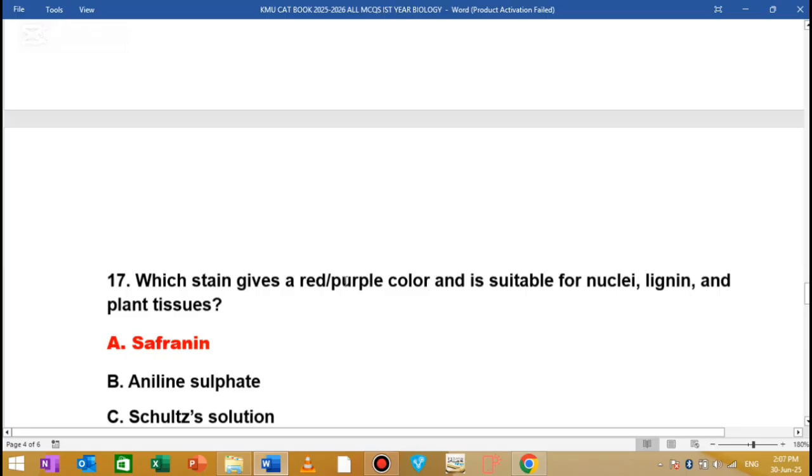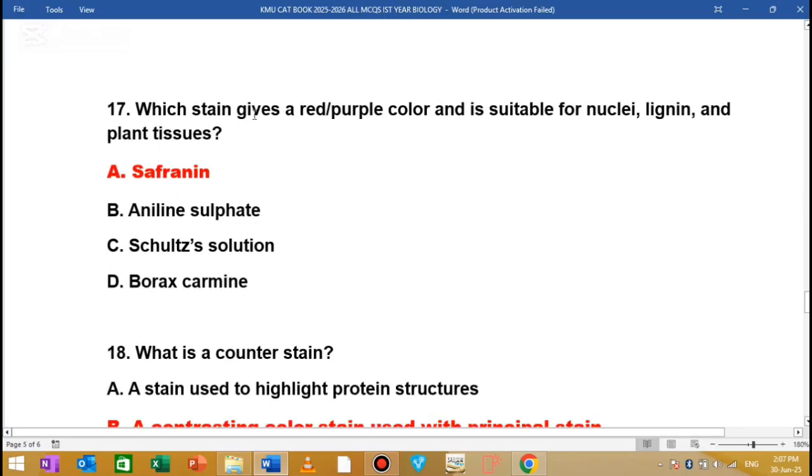MCQ number 17: Which stain gives a red or purple color suitable for nuclei, lignin, and plant tissue? If you have red or purple color for nuclei, lignin, and plant tissue, you can choose safranin.